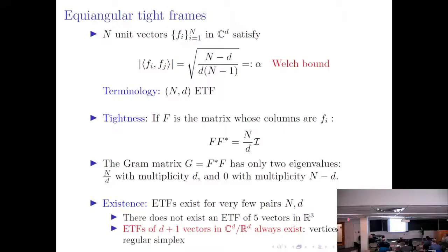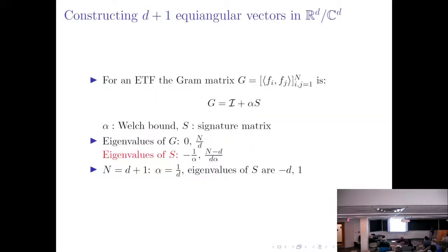The existence of ETFs is an interesting problem because they are rare and don't exist in many cases. For example, there are no ETFs of five vectors in R^3. However, if you are in a d-dimensional space, you can always have d+1 vectors forming an ETF, coming from the vertices of a regular simplex. The Mercedes-Benz frame in R^2 came from the vertices of a triangle; in R^3, they come from the vertices of a tetrahedron. We now show a very explicit construction of d+1 equiangular vectors in R^d.